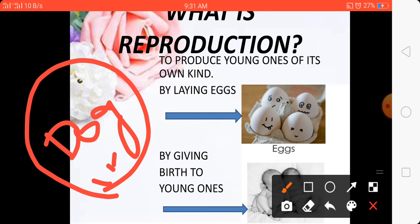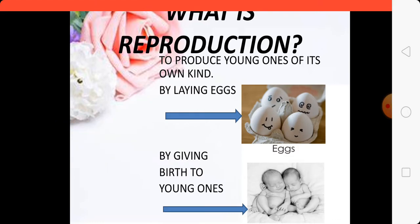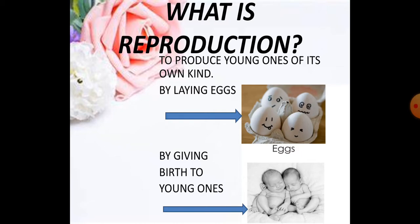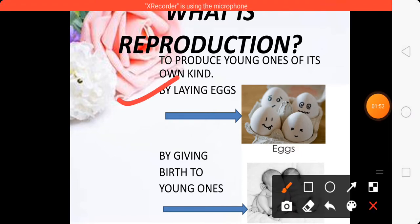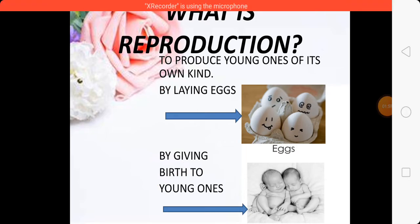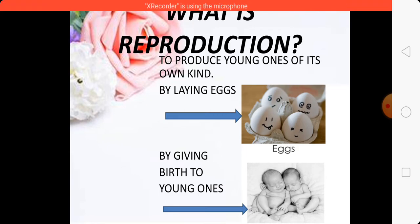Animals reproduce in two ways. As you can see in this picture, they reproduce either by laying eggs or by giving birth to babies. So animals reproduce in two ways — some animals give birth to the young ones and some animals lay eggs.